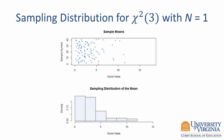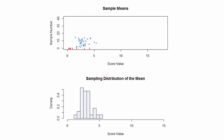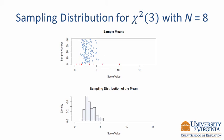Let's see what happens when we increase the sample size. In the next animation, we will use a sample of 8 observations. The sampling distribution still appears to resemble the population distribution and is not normally distributed. Let's increase the sample size again — this time we will use samples of 30 observations.